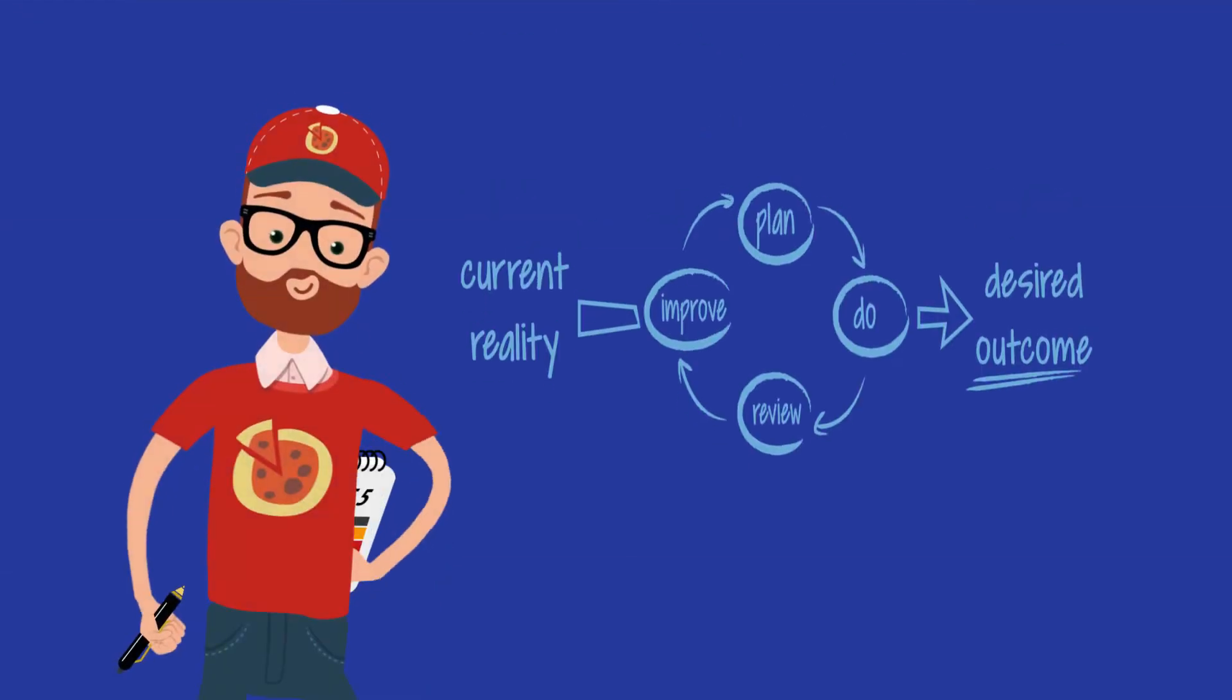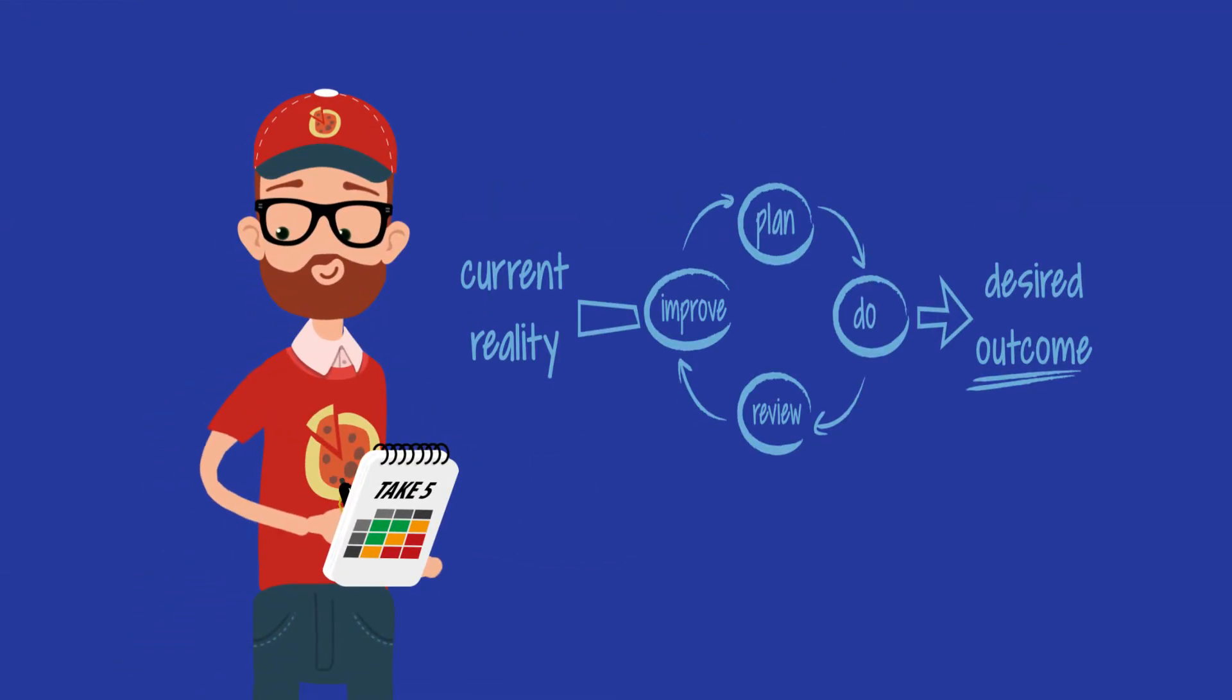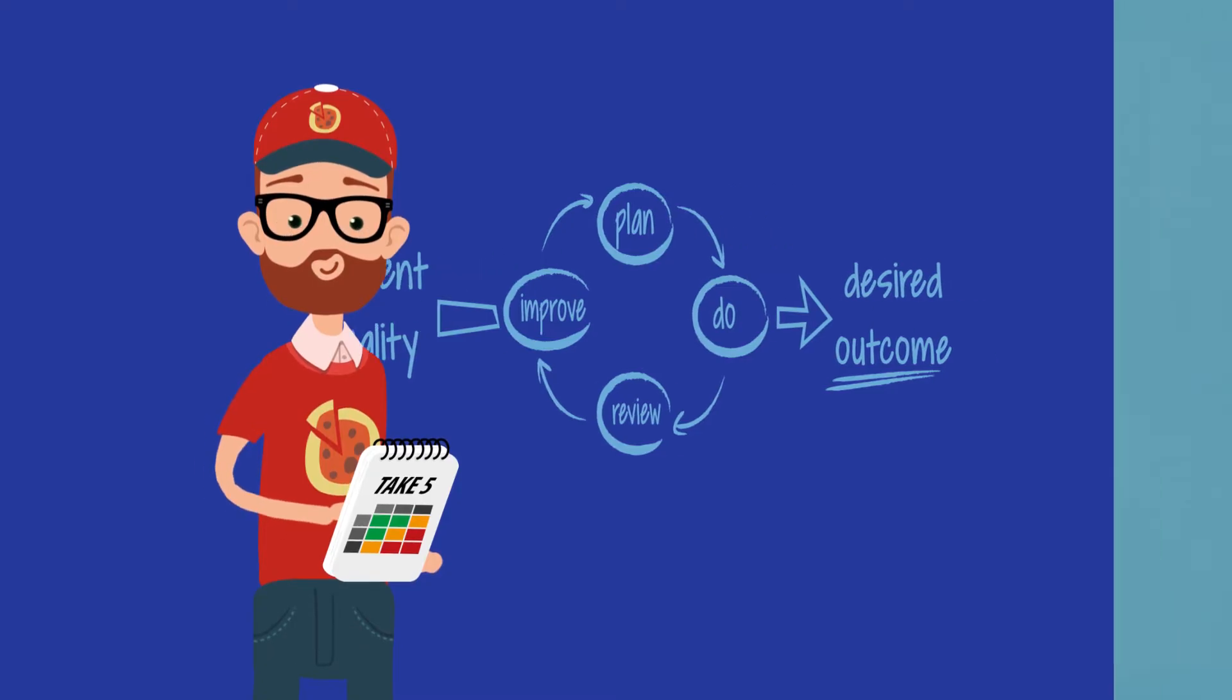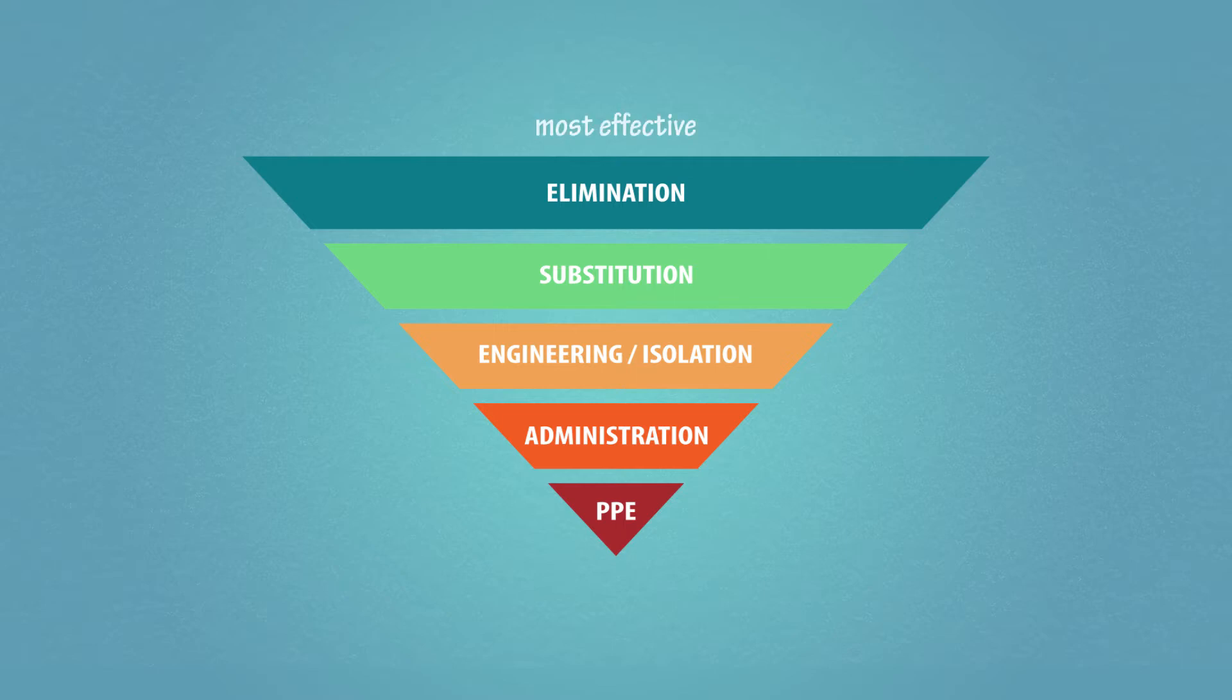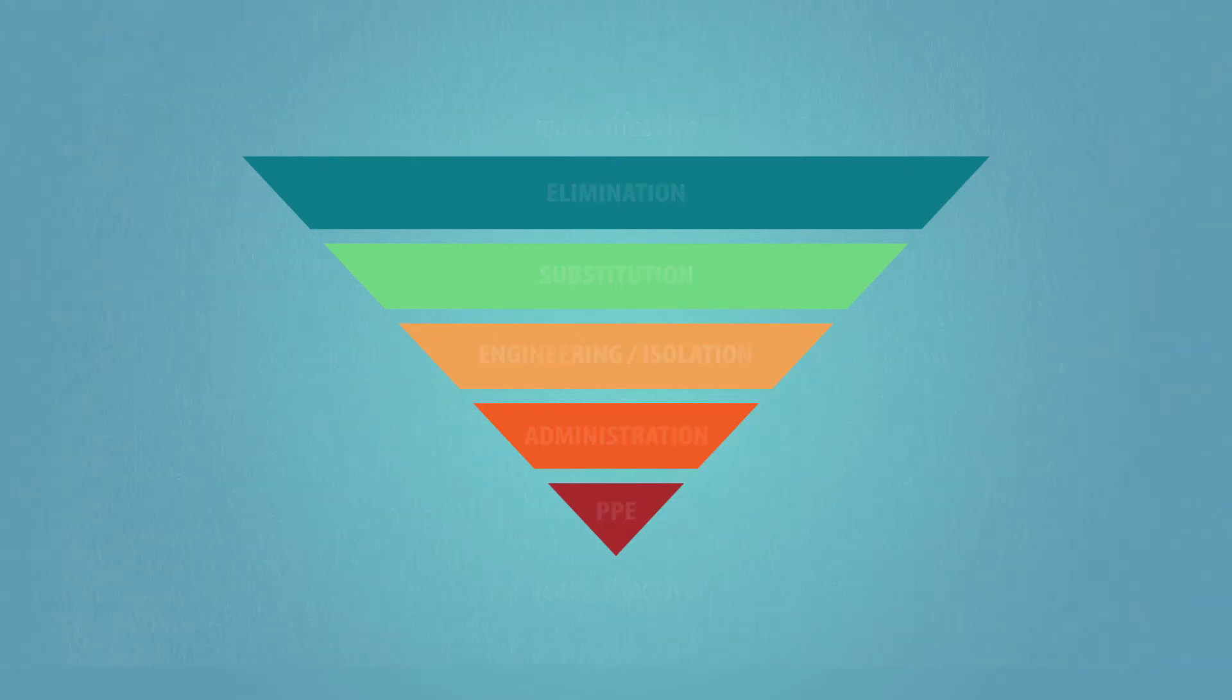Plan and implement controls to eliminate or reduce risks before you proceed with your task. Some types of controls are more effective than others. Use the hierarchy of controls to choose the best method.